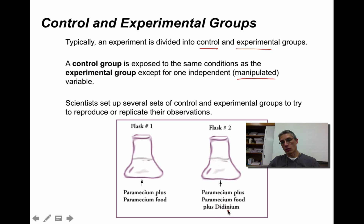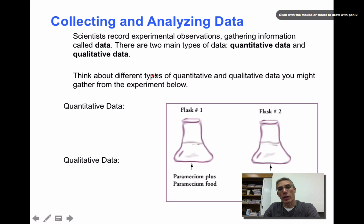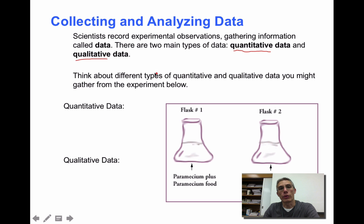After setting up and conducting our controlled experiment, we need to gather data. There are two different types of data. One is quantitative, which deals with numbers, and the other is qualitative, which does not deal with numbers.